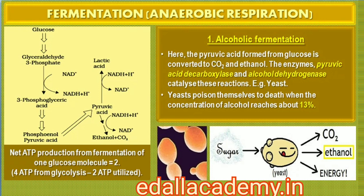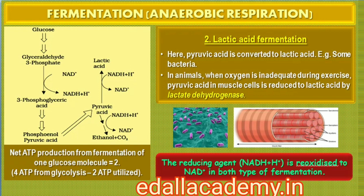In fermentation, say by yeast, the incomplete oxidation of glucose is achieved under anaerobic conditions by sets of reactions where pyruvic acid is converted to CO2 and ethanol. The enzymes pyruvic acid decarboxylase and alcohol dehydrogenase catalyze these reactions. Other organisms like some bacteria produce lactic acid from pyruvic acid. In animal cells too, like muscles during exercise, when oxygen is inadequate for cellular respiration, pyruvic acid is reduced to lactic acid by lactate dehydrogenase. The reducing agent is NADH + H+, which is reoxidized to NAD+ in both processes.